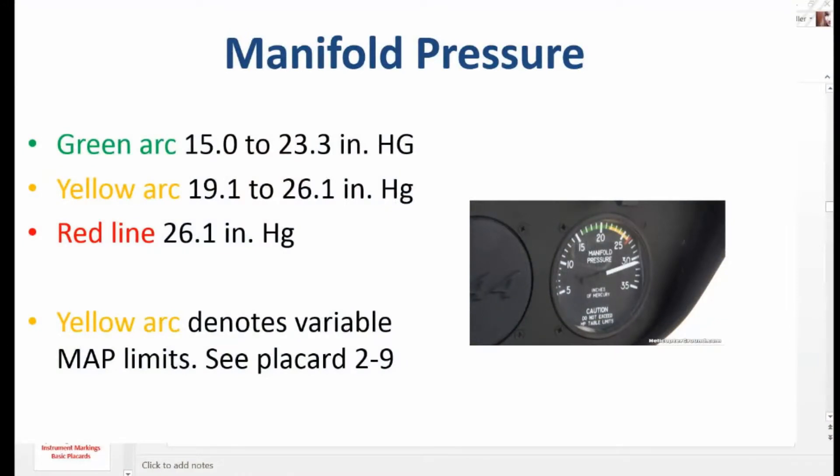Manifold pressure. Green arc, 15 to 23.3 inches HG. Yellow arc, 19.1 to 26.1 inches HG. Red line, 26.1 inches HG. Yellow arc denotes variable MAP limits. See placard 2-9.